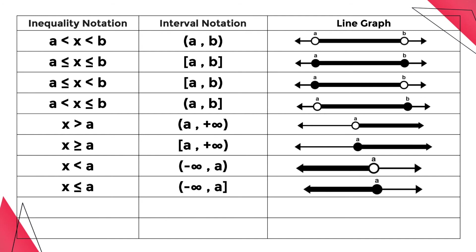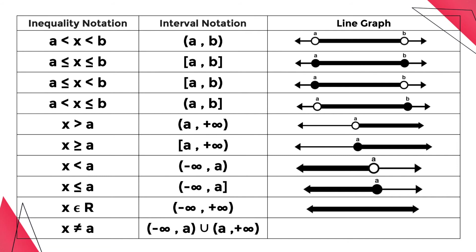The ninth one means all real numbers, or the set of all real numbers, which is represented by open parenthesis negative infinity, comma, positive infinity, close parenthesis. And this is how it looks like in the graph. Lastly, this means all real numbers x except a, which is represented in interval notation using open parenthesis negative infinity, comma, a, close parenthesis, union of open parenthesis a, comma, positive infinity, close parenthesis. And this is how it looks like in the graph.